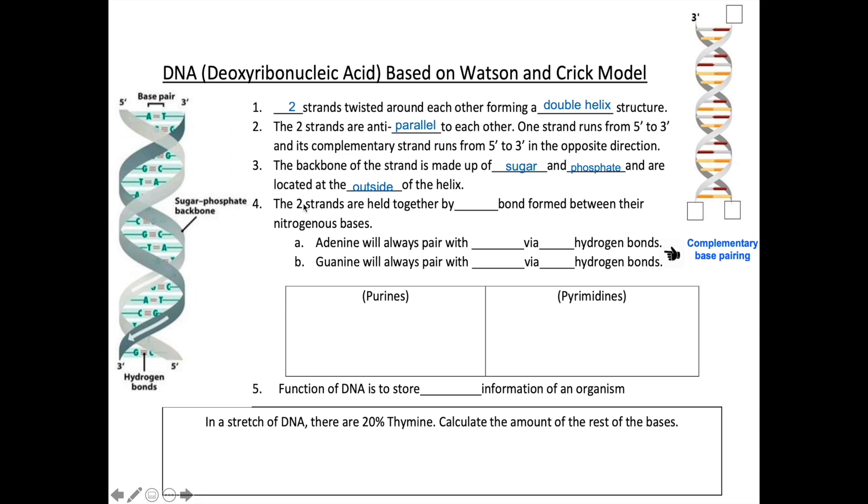The two strands are held together by hydrogen bonds formed between their nitrogenous bases. As you can see in the diagram, adenine A will always pair with T via two hydrogen bonds. Meanwhile, guanine G will always pair with cytosine C via three hydrogen bonds. This is known as complementary base pairing.